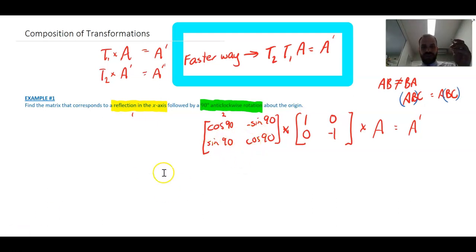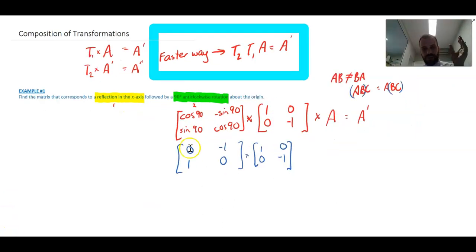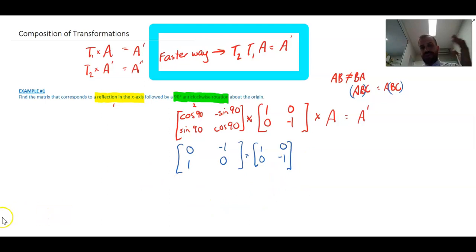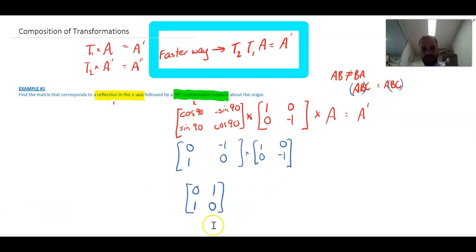We turn all the trig values into numbers — they're all ones and zeros — and perform the matrix multiplication, getting another matrix of zeros and ones. That is our answer.